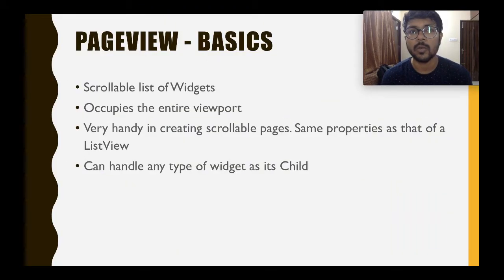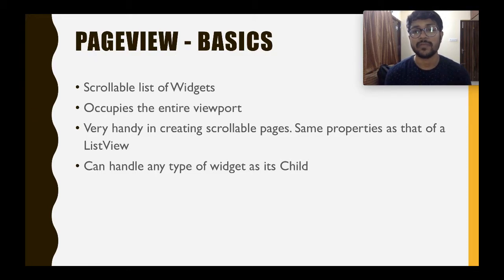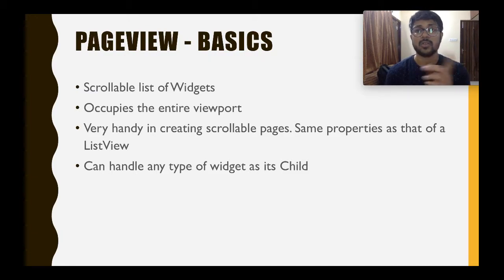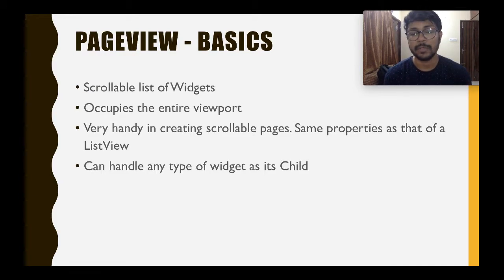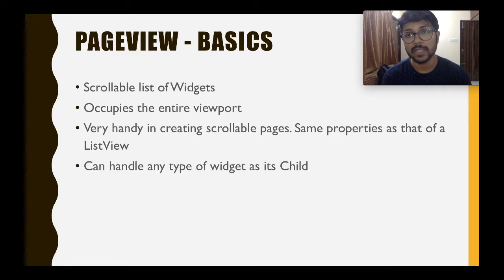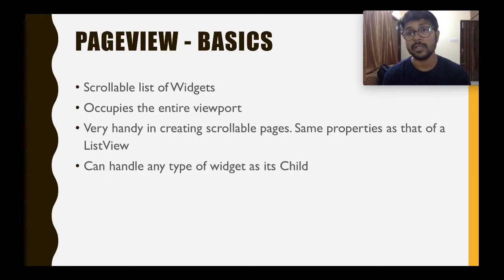Starting off, we're going to talk about what the page view basics are. Page views are technically scrollable lists, more like list views that we saw. Instead of having a list of things, you're going to have a list of pages, so it mirrors a page-like widget in the app. You can scroll it up and down, or left and right, and it's going to occupy the entire viewport — meaning the entire application. It's very handy for creating faster pages, and it can support any type of widget.